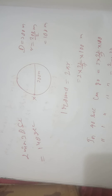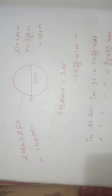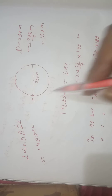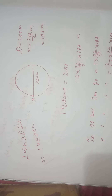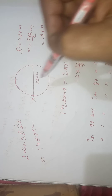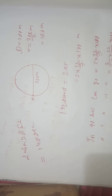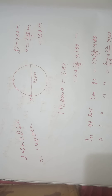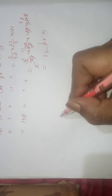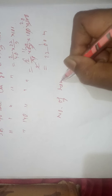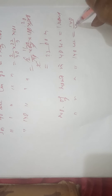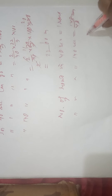Now we have to find the displacement. After 2 minutes 20 seconds, the athlete covers 2200 meters. We need to find out how many rounds the athlete covered and where the final point is. In 40 seconds the athlete completes one round. So in 140 seconds, the number of rounds = 140 ÷ 40 = 3.5 rounds.